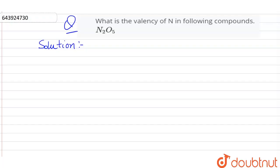What is the valency of N in the following compound N2O5? Let the valency of N in N2O5 be x.